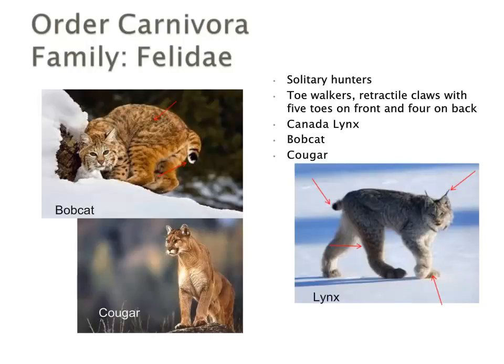Our first family is the Felidae — our cats: bobcats, cougars, and lynx. They are generally solitary hunters, walk on their toes, and have retractile claws, with five toes in the front and four in back. These species are all very different from each other. The two most likely to be confused are the bobcat and the lynx, although even from images placed together, there is a size difference and their anatomy and structure is quite different.